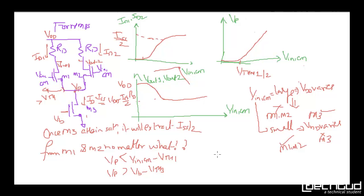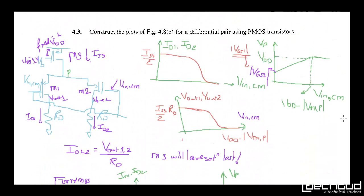Now let us see the PMOS case. The differential pair has changes — the current goes to supply, and there are Rd, Rd resistors where you get Vout1 and Vout2. We are varying Vincommon mode. Now this is Vsg — remember it was Vgs in NMOS. Here it depends on Vp.